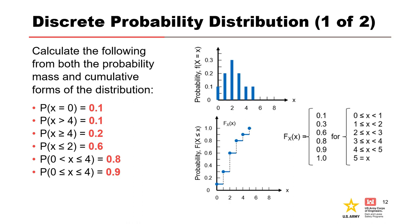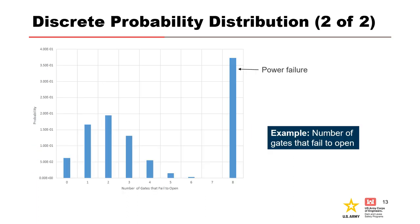The probability that x is greater than 0 but less than or equal to 4 equals the cumulative probability up to x equals 4, which is 0.9, minus the 0.1 probability at x equals 0, giving 0.8. The cumulative probability up to and including x equals 4 is 0.9. An example of a discrete probability distribution would be the number of gate failures — you cannot have 0.3 gate failures because a gate either fails or does not, so it must be a whole number.